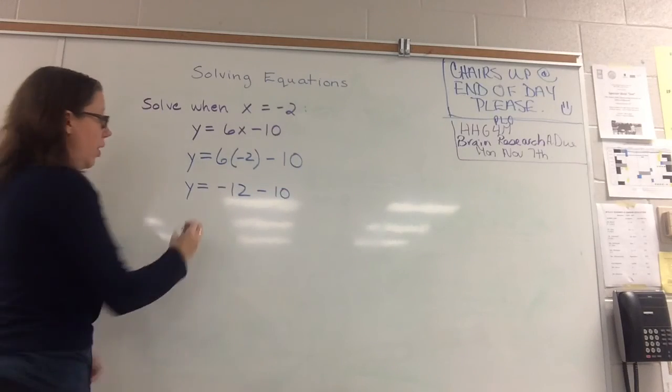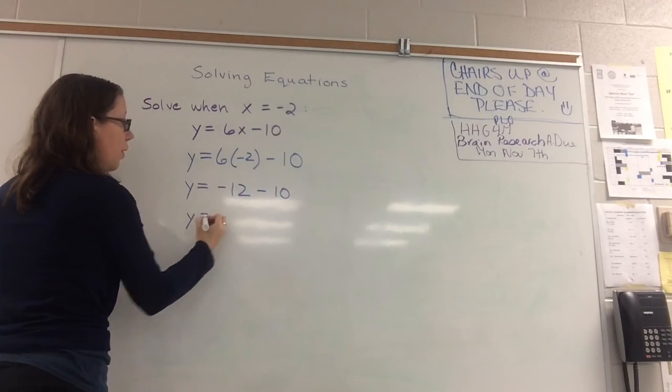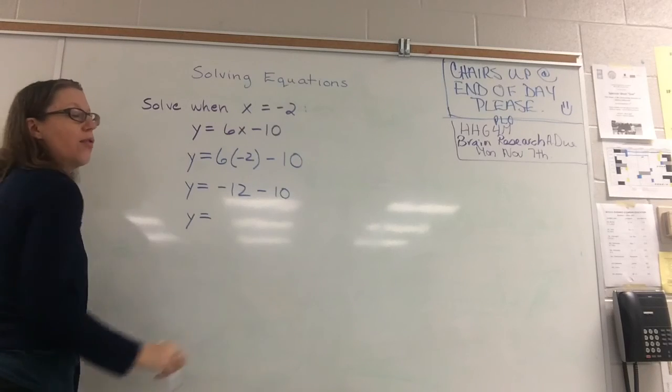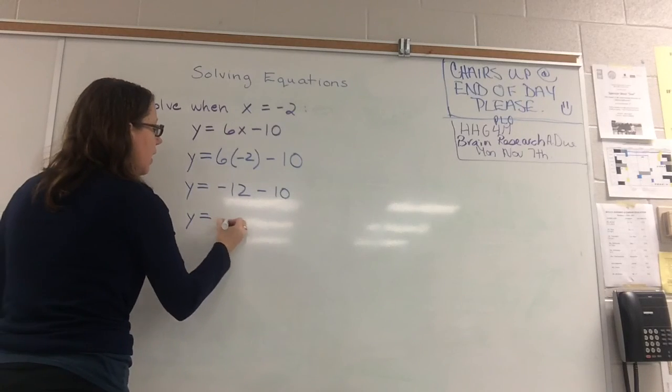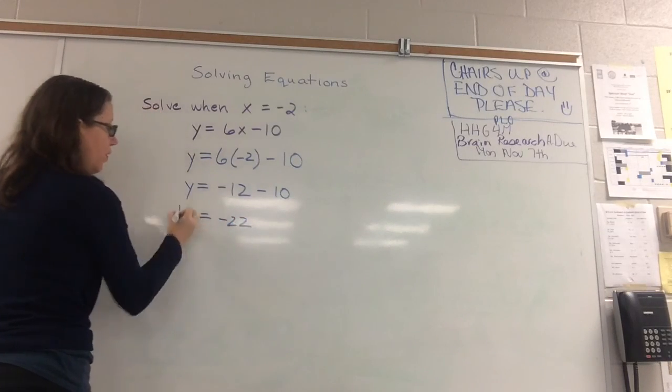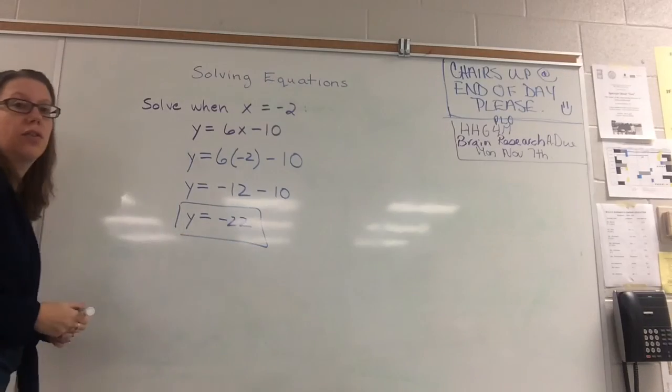And go through BEDMAS all over again. Brackets, exponents, divide, multiply, add, subtract. Negative 12 minus 10 is negative 22. And that's your solution.